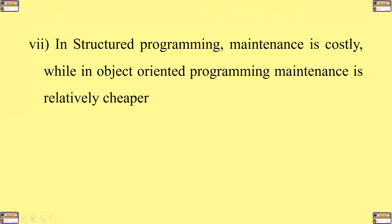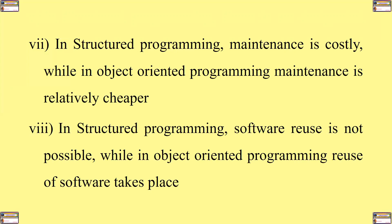Number seven, in structured programming, maintenance is costly, while in object-oriented programming, maintenance is relatively cheaper. Number eight, in structured programming, software reuse is not possible, but in object-oriented programming, reuse of software takes place.